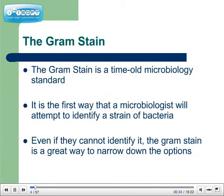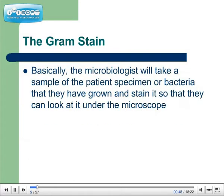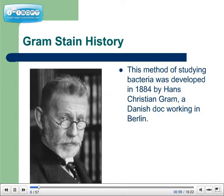The gram stain is a time-old microbiology standard. It is the first way that a microbiologist will attempt to identify a strain of bacteria. Even if they cannot identify it, the gram stain is a great way to narrow down the options. The microbiologist will take a sample of the patient's specimen or bacteria that they have grown and stain it so they can look at it under the microscope. This method of studying bacteria was developed in 1884 by Hans Christian Gram, a Danish doctor working in Berlin.